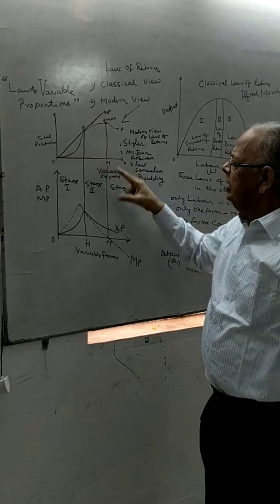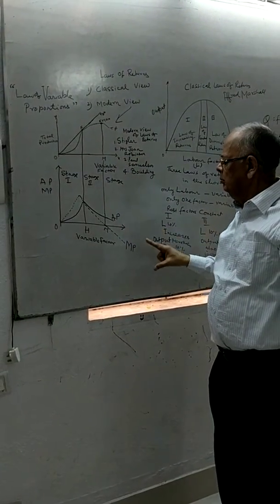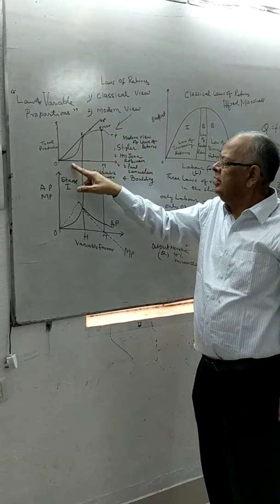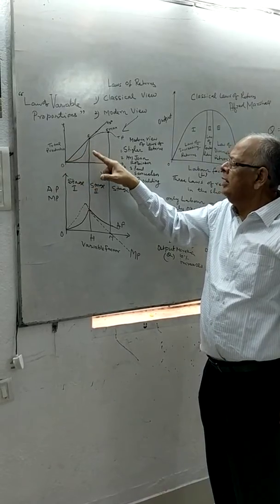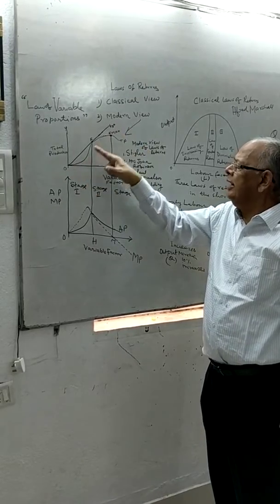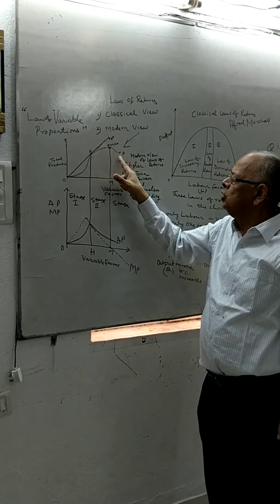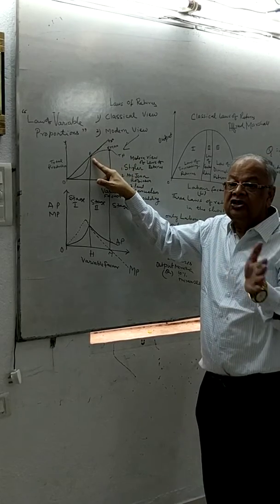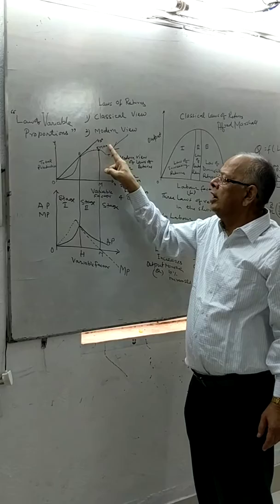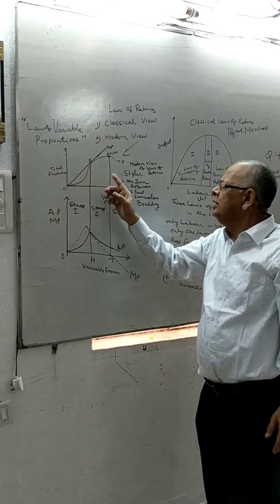The law of variable proportions has three key concepts: total production, average production, and marginal production. In the first stage, the total production curve rises upward and is convex rightward. Then a 45-degree tangent line touches the total production curve at point F, after which the curvature changes from convex rightward to convex upward.